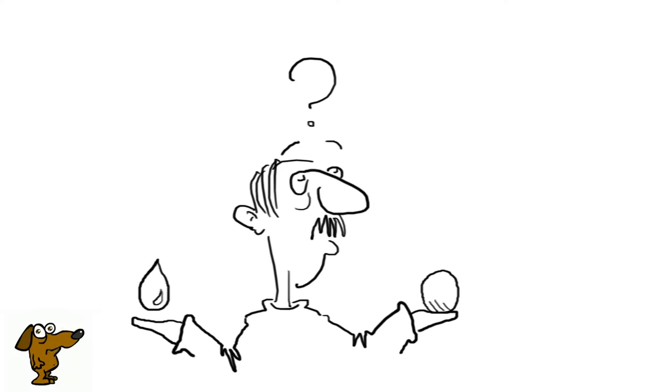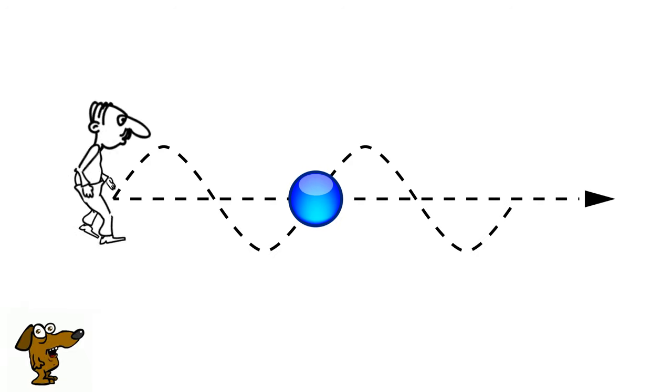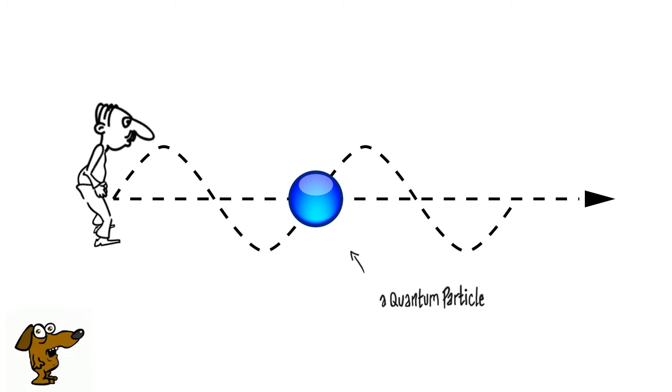We are now just touching the surface of these strange behaviors. This example of matter waves embodies another core aspect of quantum physics known as the uncertainty principle.